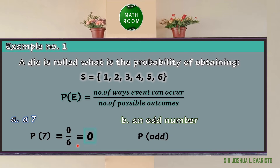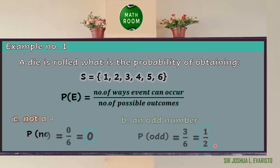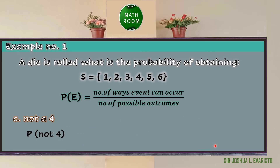Now let us solve the probability of getting an odd number. The probability of getting an odd number is equal to 3 over 6, because we have 3 odd numbers in the sample space: 1, 3, and 5, and the total possible outcomes are 6. We can simplify 3 over 6 to get 1 half, because 3 divided by 3 is 1 and 6 divided by 3 is 2. One half is 50%, so the probability of getting an odd number when you roll a die is 50% or 1/2.